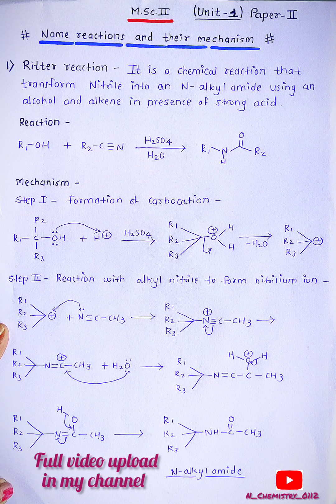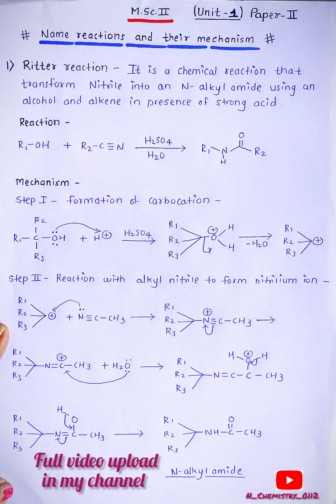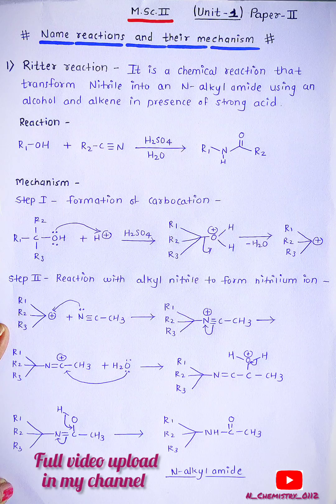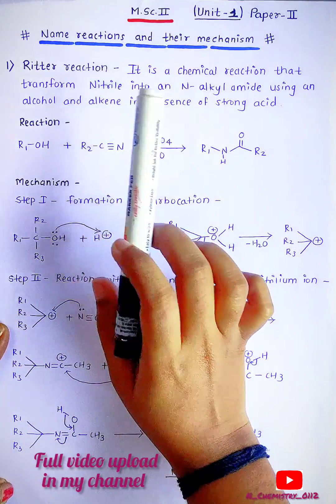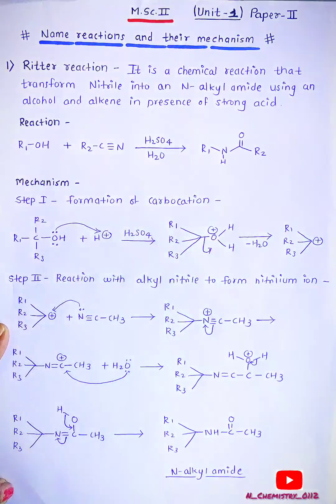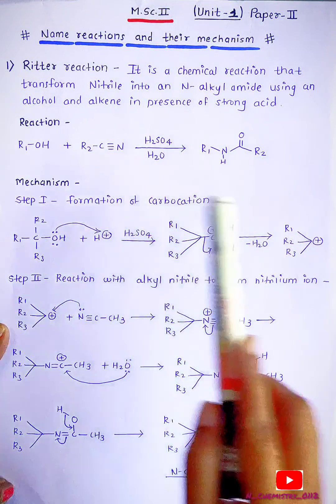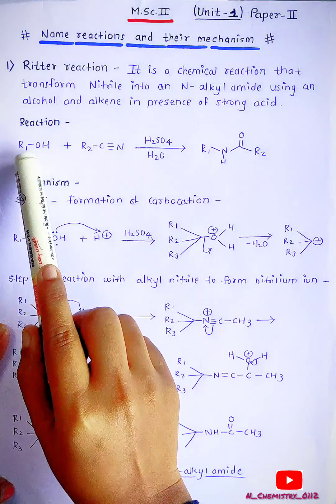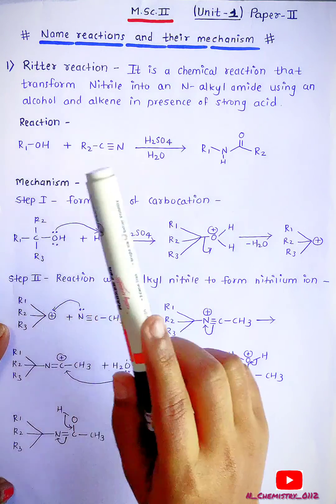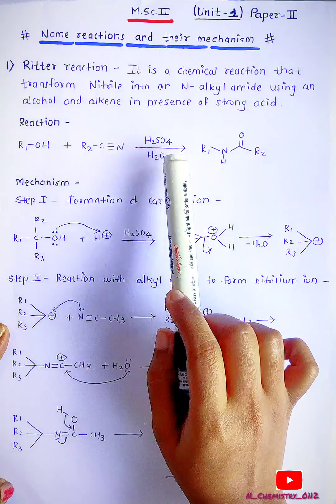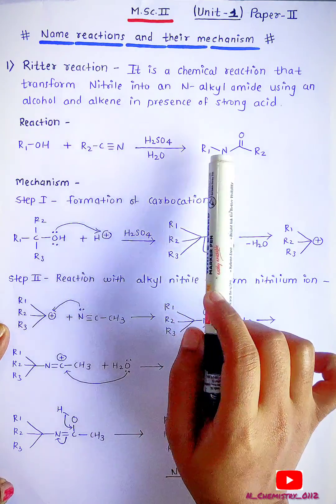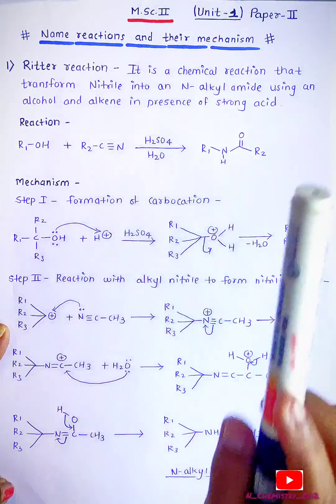The first name reaction is the Ritter reaction. What is meant by Ritter reaction? It is a chemical reaction that transforms nitrile into an N-alkyl amide using an alcohol and alkene in presence of strong acid. Here the reaction is: alcohol gets treated with nitrile in presence of H2SO4 and water molecule to form an alkyl amide.